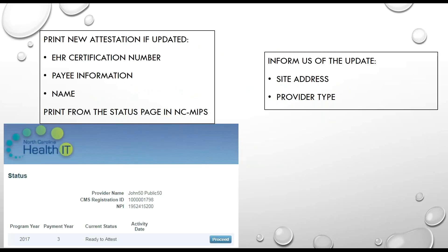If you update your EHR certification number, the pay information, or change your name, you'll need to print and sign an entirely new attestation. You can print a new copy of the entire attestation from the status page in NC MIPS. If you update your site address or provider type, please tell us after you've made the update so we can be sure that the update went through.